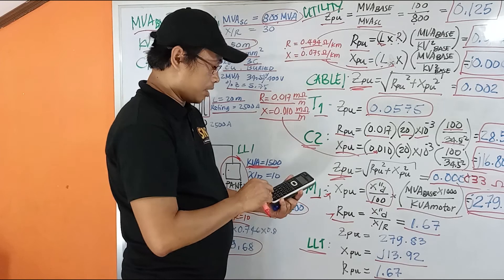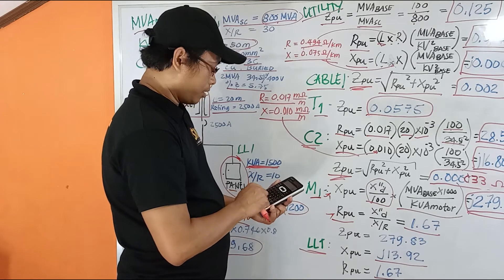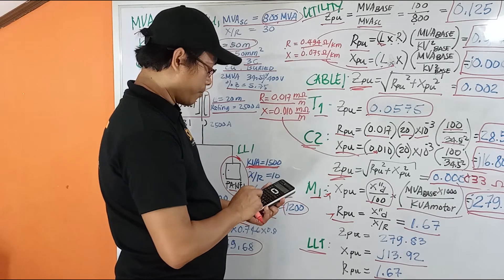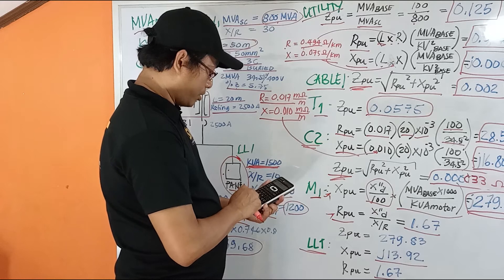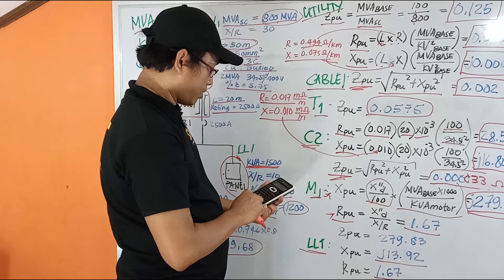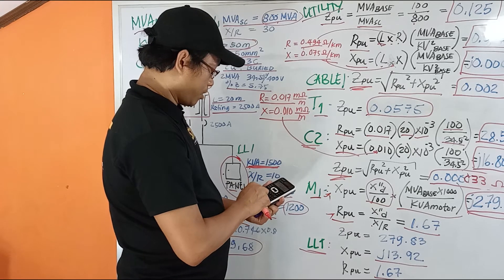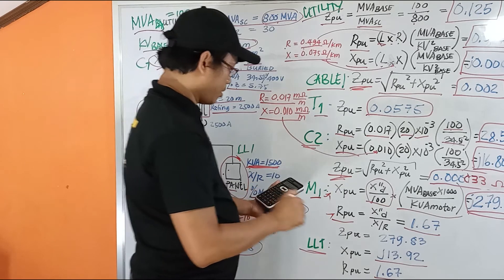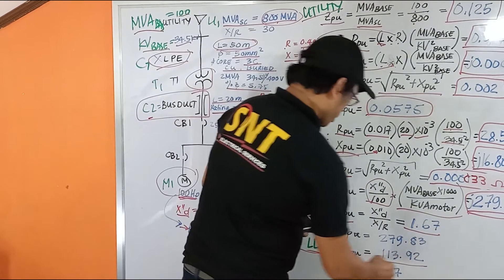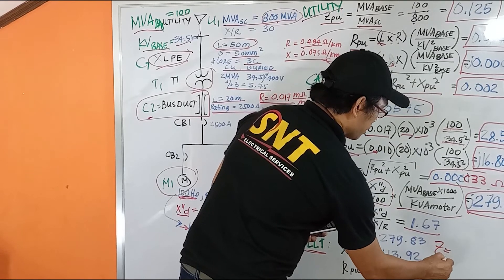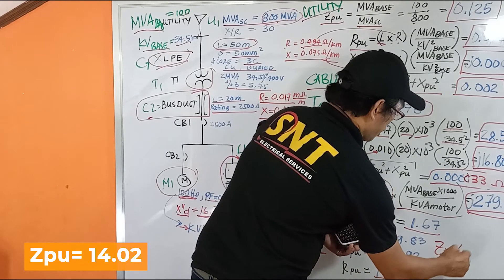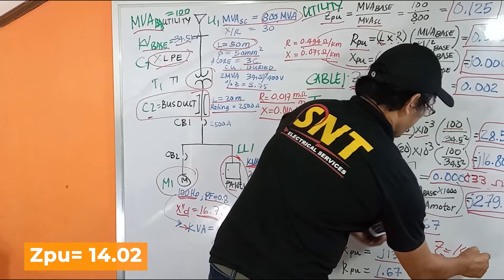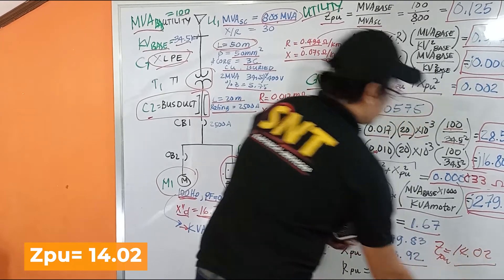The result of our XPU is 13.92 and our RPU is 1.67. Then we get the impedance: square root of 13.92 squared plus 1.67 squared. The impedance here is around per unit 14.02.